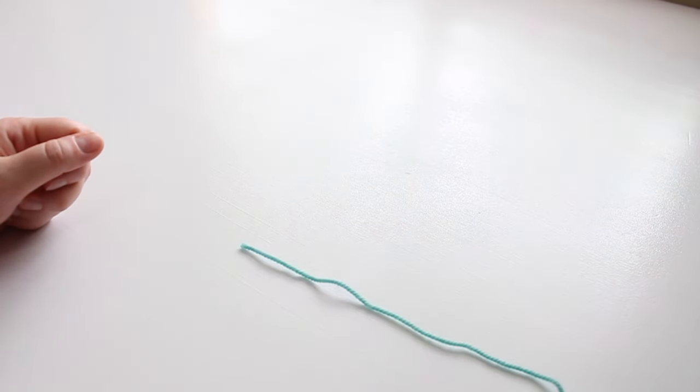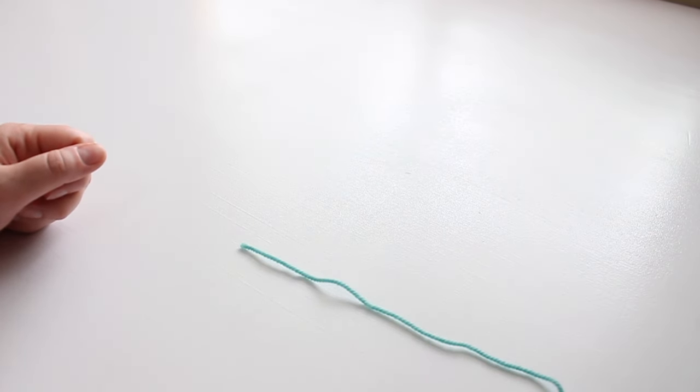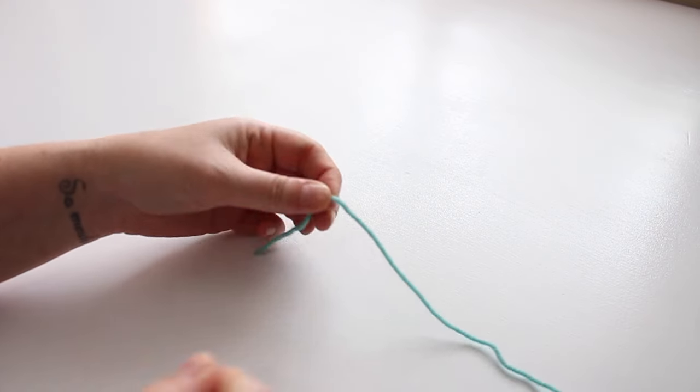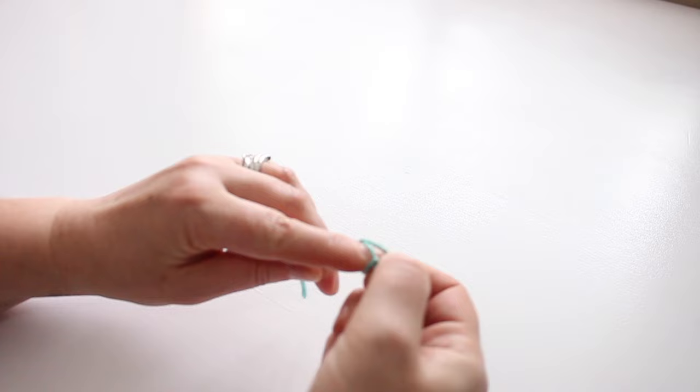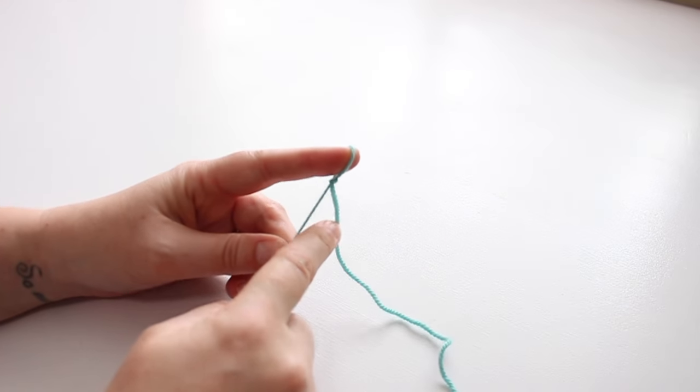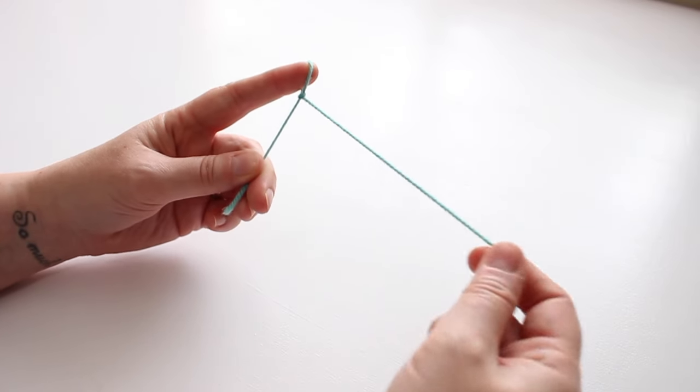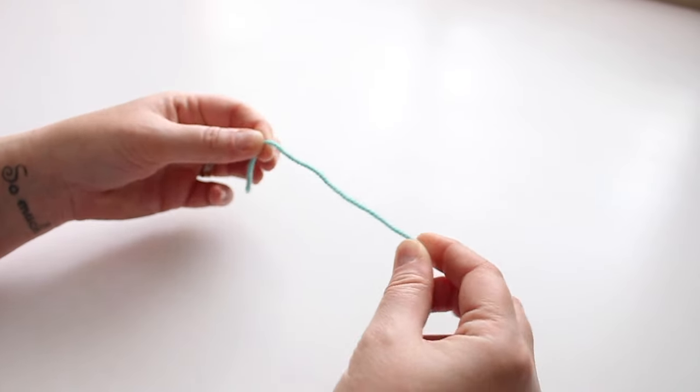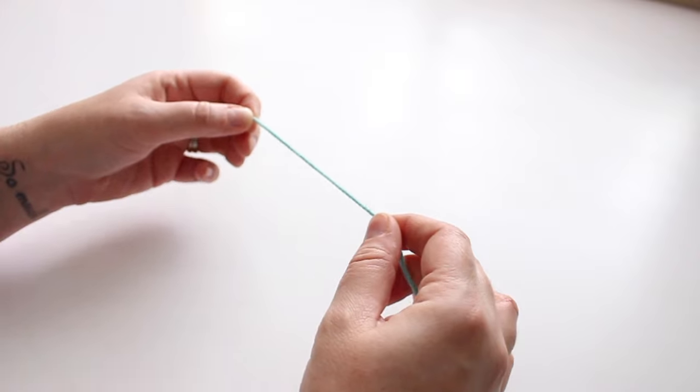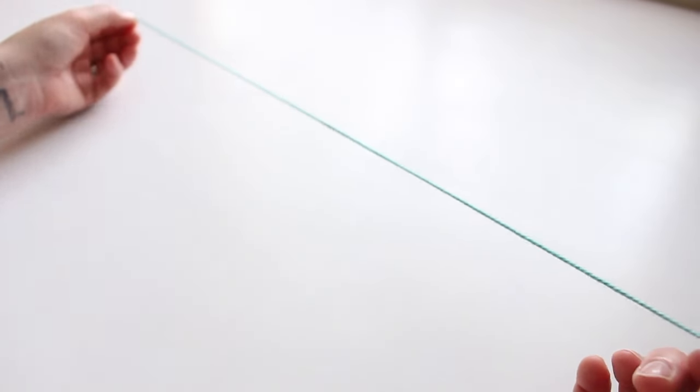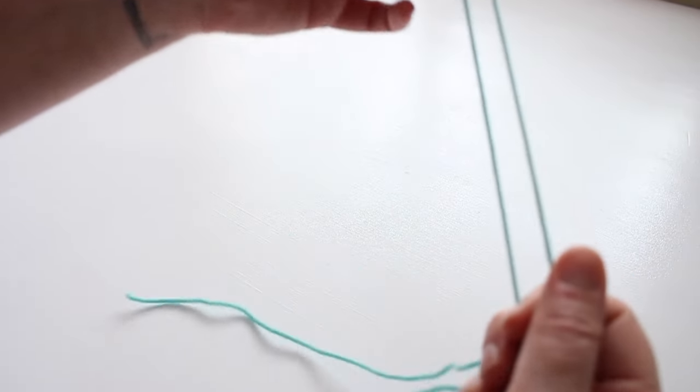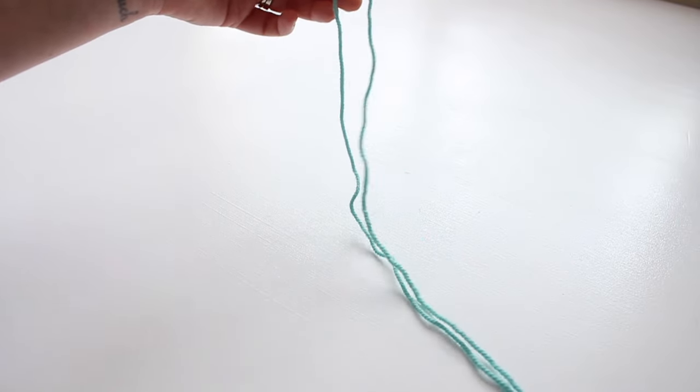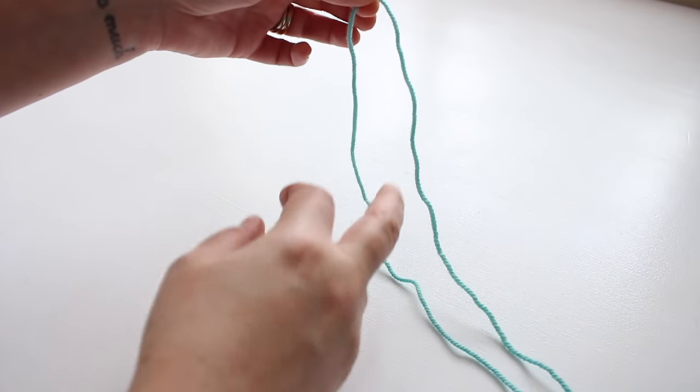This video focuses on the German twisted cast-on, a long tail cast-on method. Rather than starting at the short end of your yarn and working with the long tail, we wind off a length of yarn equal to that needed to cast on our stitches, fold the yarn in half, and use two lengths of yarn to create our cast-on.